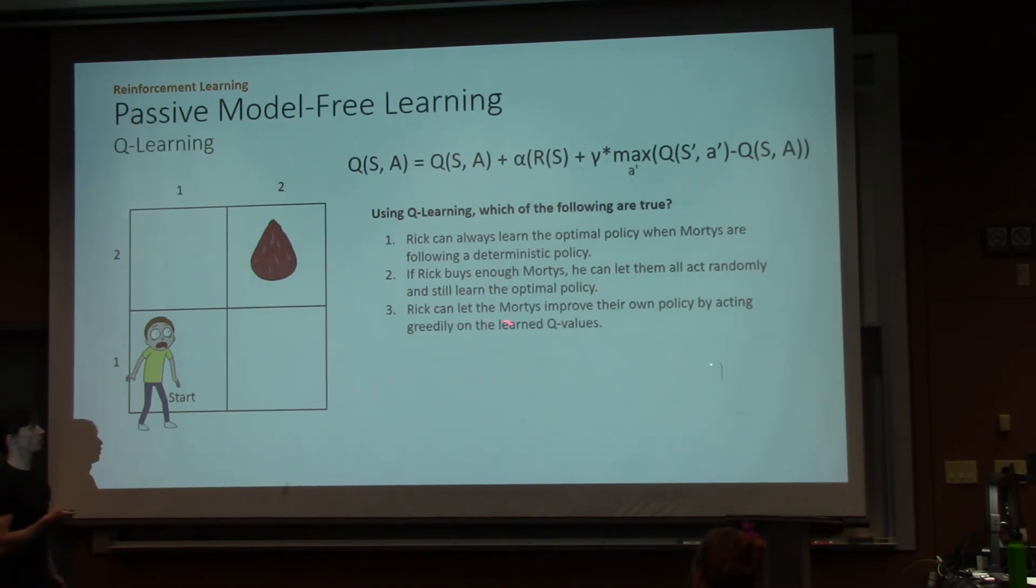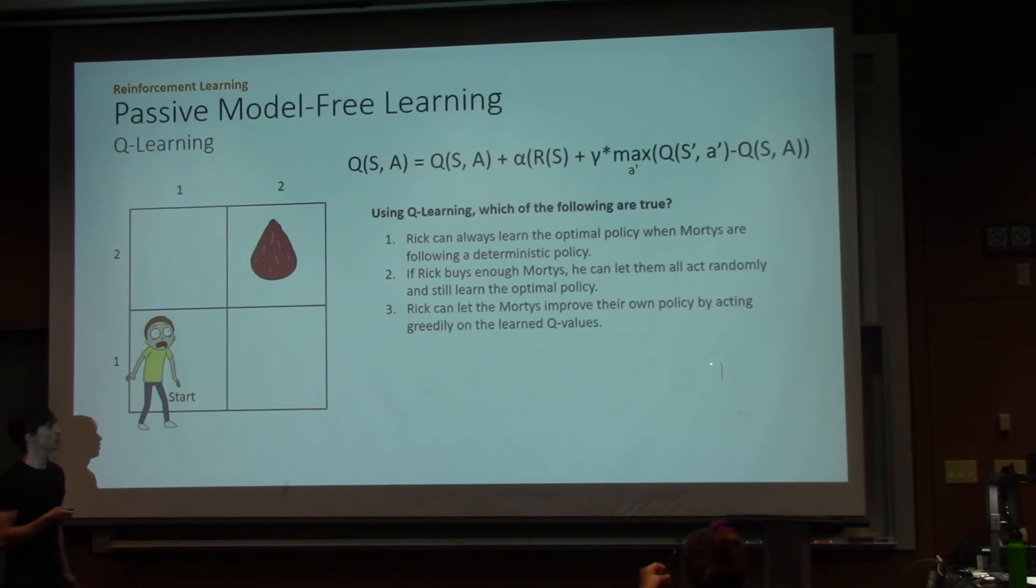So, using Q-learning, which of the following are true? Rick can always learn the optimal policy when Mortys are following a deterministic policy. If Rick finds enough Mortys, he can let them all act randomly and still learn the optimal policy. Or, Rick can let the Mortys improve their own policy by acting greedily on the learned Q-value. Which of you think number one is true? How about number two? And number three? Alright.